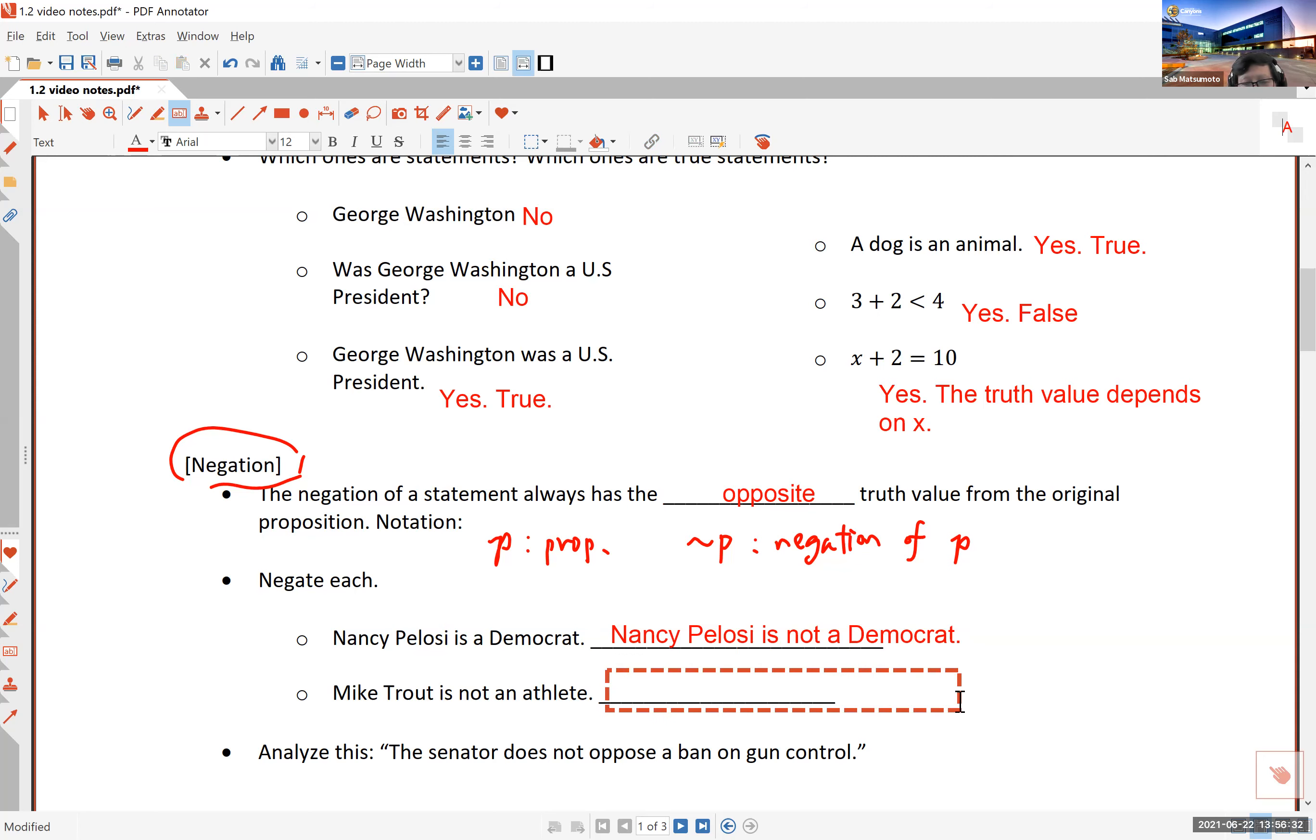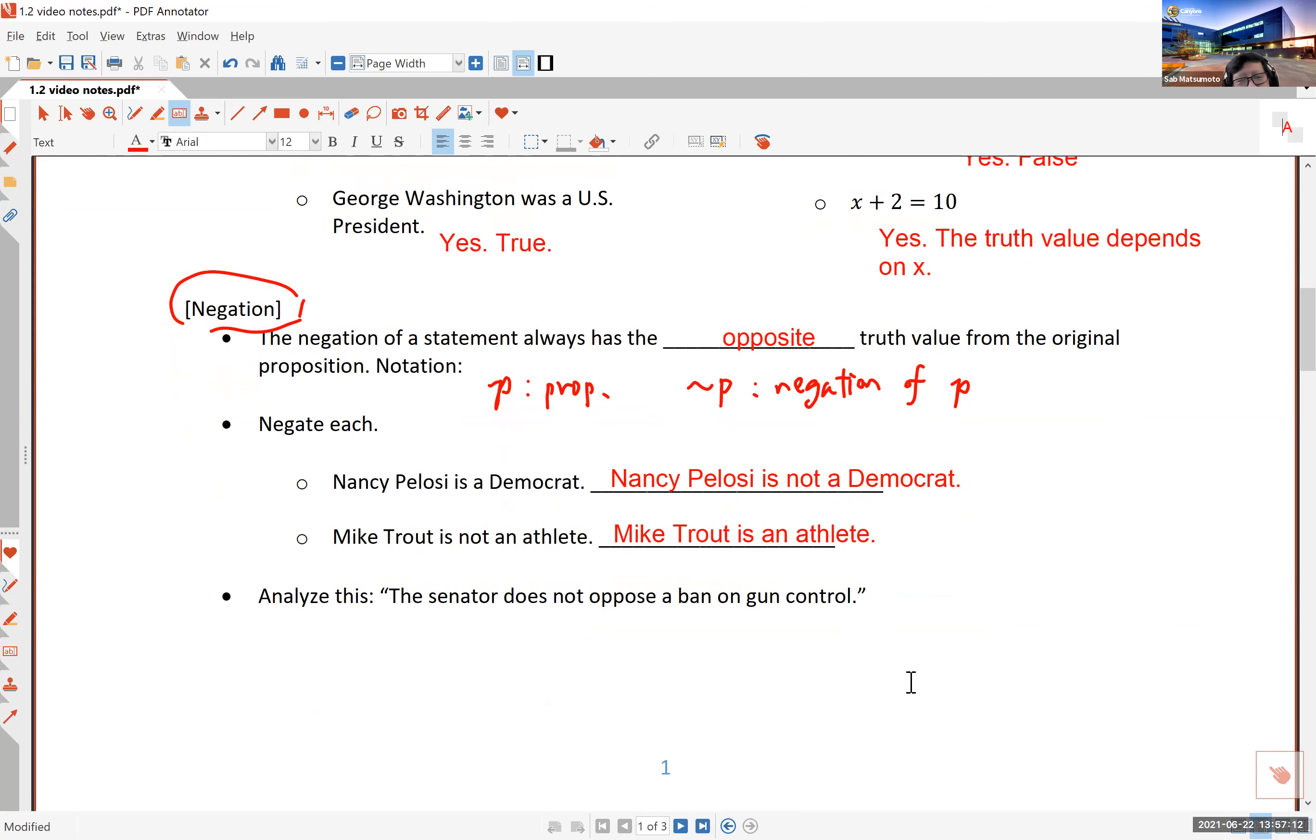The next example says Mike Trout is not an athlete. Now, it is a declarative sentence. It's complete. Therefore, it is a proposition. It turns out to be a false proposition because if you know who Mike Trout is, he is an outfielder for the Los Angeles Angels of Anaheim. And so he is an athlete. Now, it says he's not an athlete. So let's negate that. He is not, not an athlete. Well, you don't want to say not twice. If you want to say the double negative, you simply erase the word not. Mike Trout is an athlete. That's the way to negate the already negative statement. It's just like saying negative of negative two is positive two. Double negatives cancel each other.